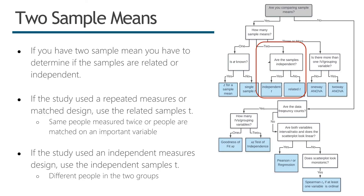Now we move down the flowchart to examples where you have two sample means. If you have two sample means, there are two options: an independent T or a related T. This depends entirely on the design of the study. If the samples are related — such as a repeated measures design where you measure the same people twice, or a matched study — you use the related samples T. For the independent measures T, you have two entirely separate groups of people.